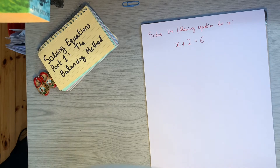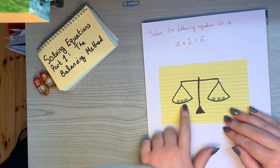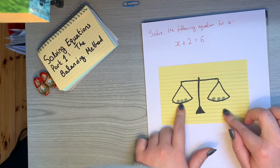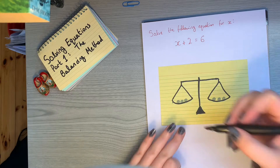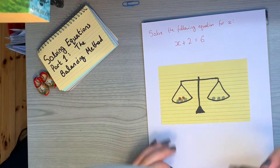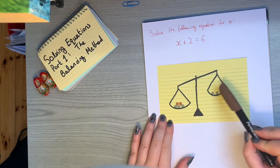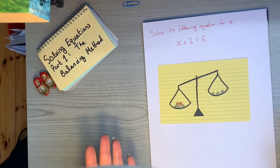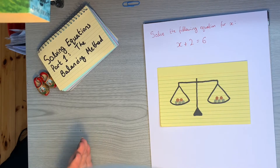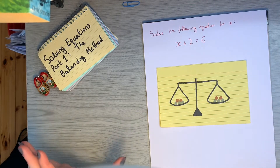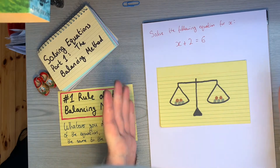Let's have a look at scales like this. These are old balancing scales, and on one side I've got 3 rocks, and on the other side I've got 3 rocks as well, so the scales are balanced. But if I add 2 rocks to one side, my scales become tipped — there are 5 rocks on this side and 3 on the other, so this side is heavier and the scales are unbalanced. But if I add 2 rocks to the other side, my scales become balanced again, because I have 5 rocks on each side.